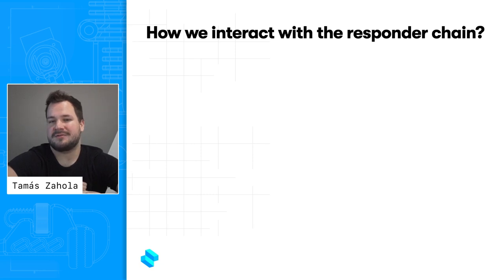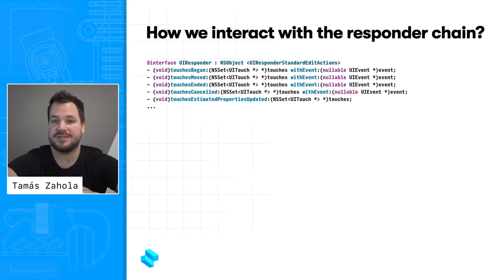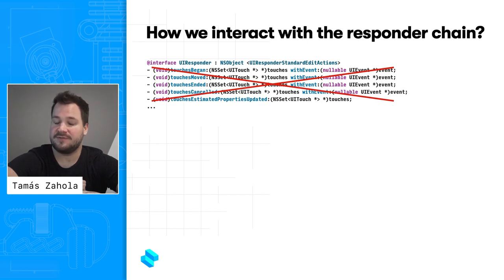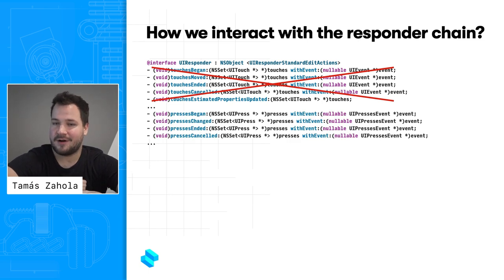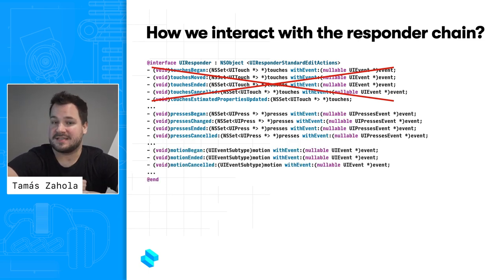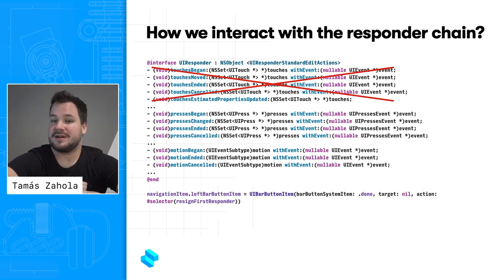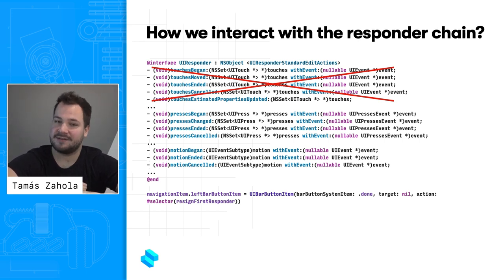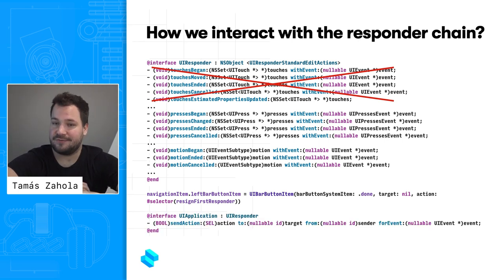Not all events are delivered to the responder chain. Touch events are delivered based on hit-testing the touch location against the view tree. Key presses and motion events, on the other hand, are delivered through the responder chain. A little-known fact: the target-action pattern used by UI controls like UIButton can also use the responder chain by passing nil as the target. In that case, the action will be sent to the first responder and then throughout the chain if not handled. There's also an API on UIApplication for manually sending an action to the first responder, which we'll make use of later.